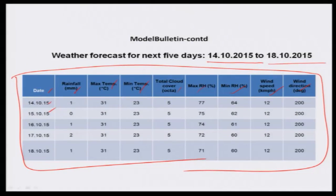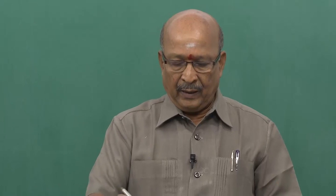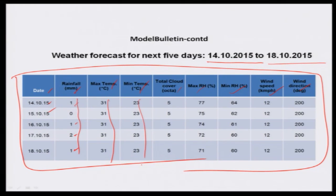On the 14th, rainfall is less than 2.5 mm — so it is not a rainy day, and this rainfall does not contribute meaningfully to the agro advisory. The maximum temperature shows no variation — coefficient of variation is 1 or 2, essentially no variability. Minimum temperature also shows no variability. Total cloud cover — no variability. There is only slight variation in maximum and minimum relative humidity.